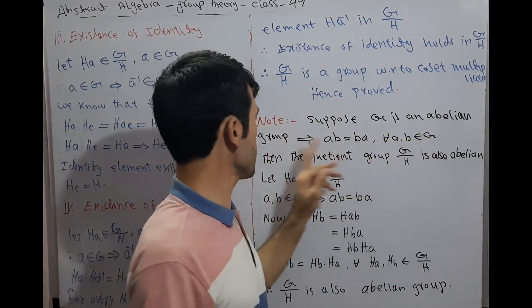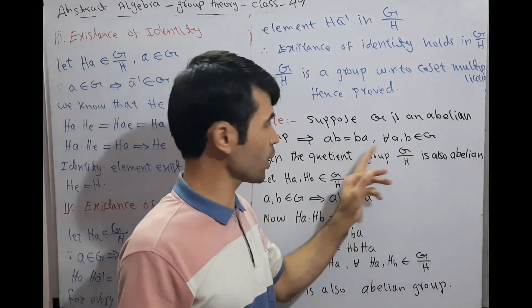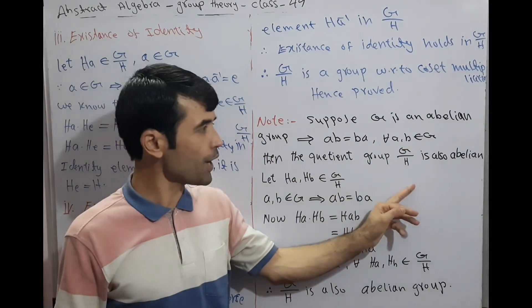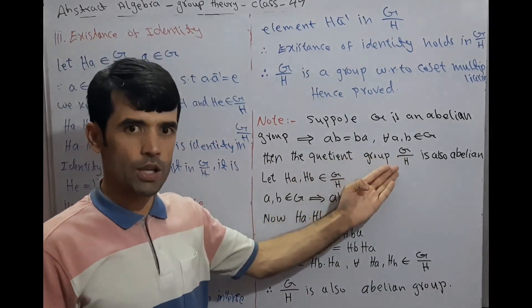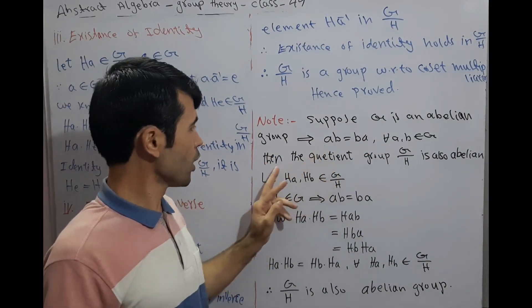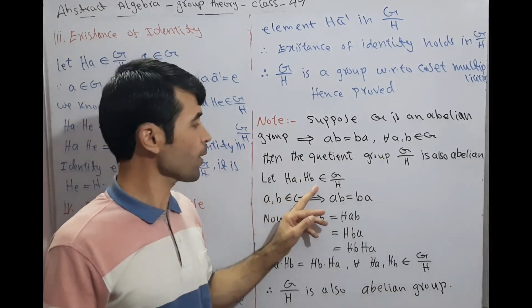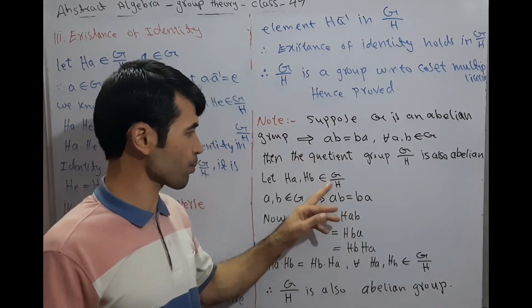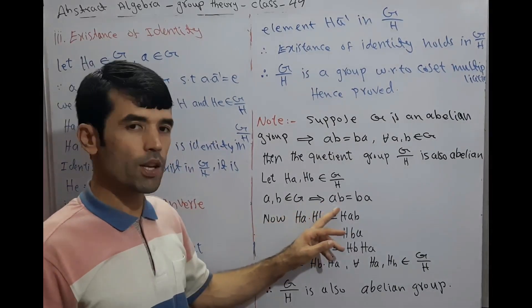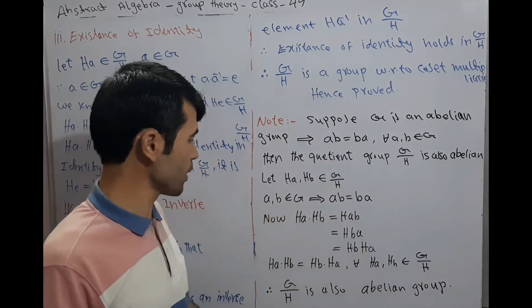Note: Suppose G is an Abelian group. This implies AB equals BA for all A, B belonging to G — this is the definition of an Abelian group. Then the quotient group G by H is also Abelian. We now prove that G by H is Abelian when G is an Abelian group. Let HA, HB belong to G by H. This implies AB equals BA because G is an Abelian group.